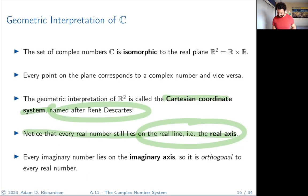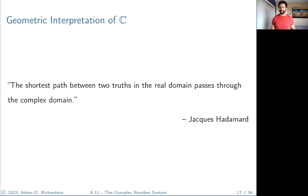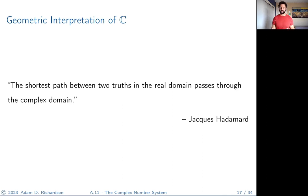I'll leave you with a quote from mathematician Jacques Hadamard: 'The shortest path between two truths in the real domain passes through the complex domain.' Often when you want to prove something about real numbers, it's much easier to pass to the complex numbers, prove it there in generality, and then project the result back down. For example, the fundamental theorem of algebra is proved using complex analysis.